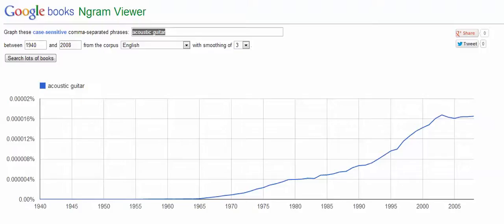Google has scanned a massive number of books, as you will have been watching a video about, and you can actually use this tool to go through and see how often particular words and phrases appear in these books. On its simplest level that's pretty basic, but what's good about this is you can pick which years you want it from, and you can compare things with each other. And you find some quite interesting results.